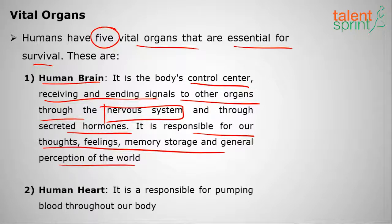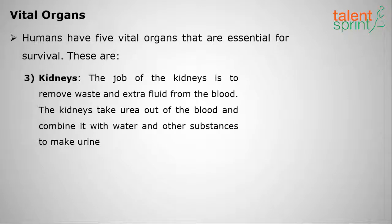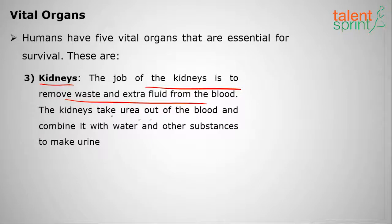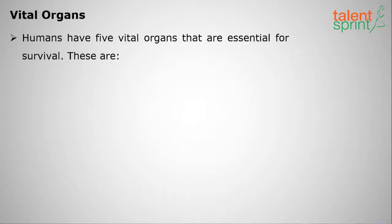The second vital organ is the heart, responsible for pumping blood throughout the body. Blood carries food and also transports waste to the kidneys. The third vital organ is the kidneys, which remove waste and extra fluid from the blood — they take urea out of the blood and combine it with water and other substances to make urine.